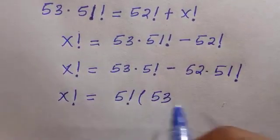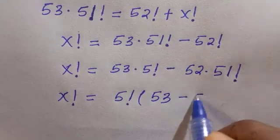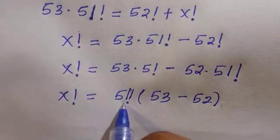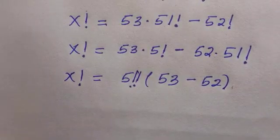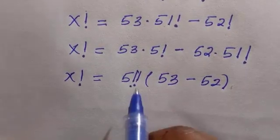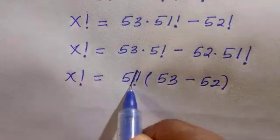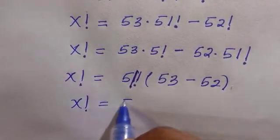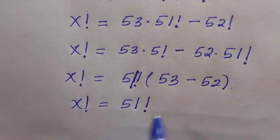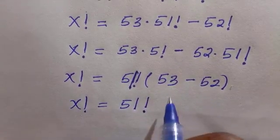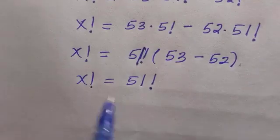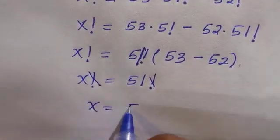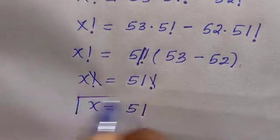This is 51 factorial times 1. We have x factorial equals 51 factorial. Since factorial cancels factorial, therefore we have x equals 51. x equals 51 is the solution to this problem.